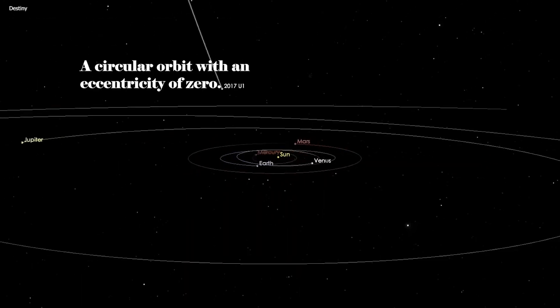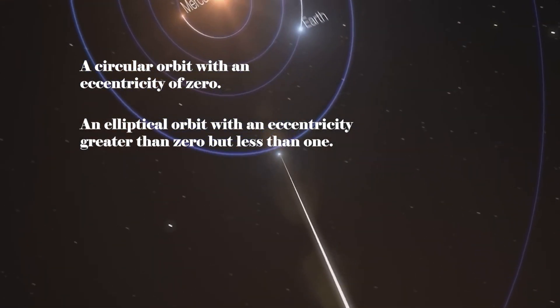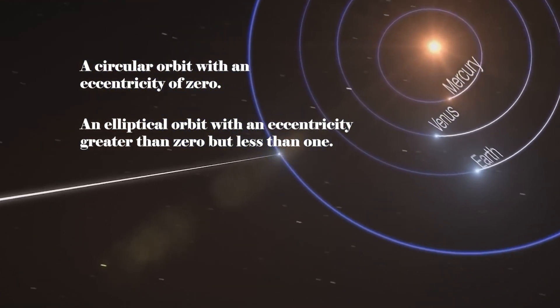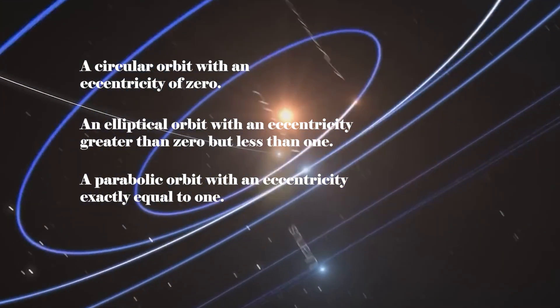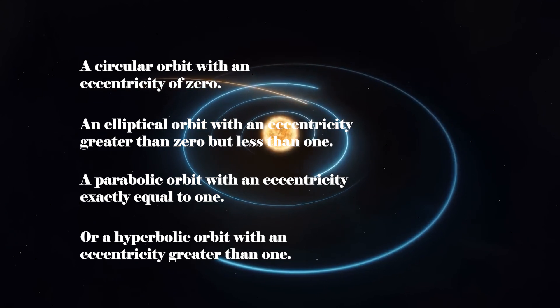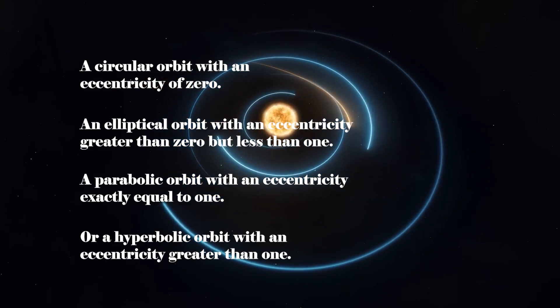A circular orbit with an eccentricity of zero, an elliptical orbit with an eccentricity greater than zero but less than one, a parabolic orbit with an eccentricity exactly equal to one, or a hyperbolic orbit with an eccentricity greater than one.